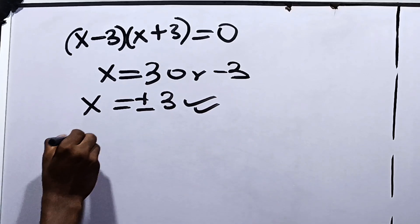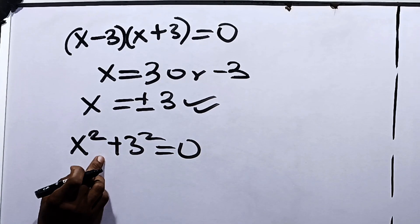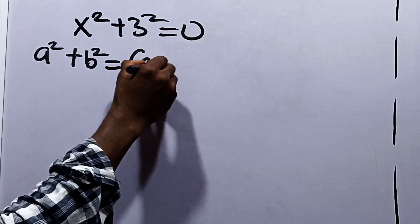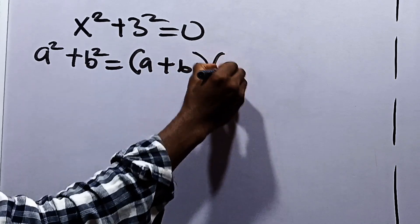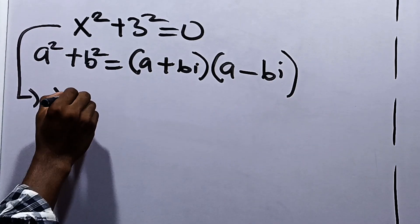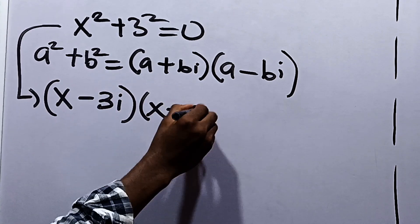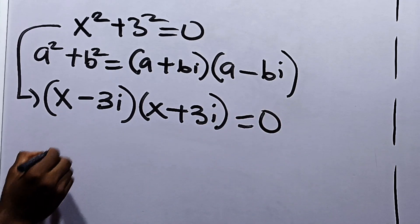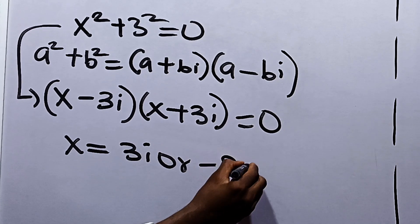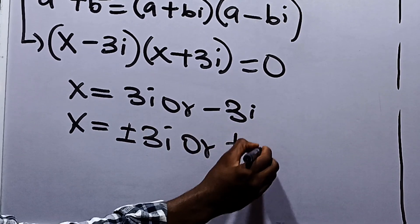For the next condition, we have x squared plus 3 squared is equal to 0. Now, if you look closely, this is a bit different — this is plus. So we use the sum of two squares: a squared plus b squared is equal to a plus bi multiplied by a minus bi. Applying this law, we get x minus 3i multiplied by x plus 3i equals 0. From here, we can say that x is equal to 3i or minus 3i. Hence, x is equal to plus or minus 3i or plus or minus 3.